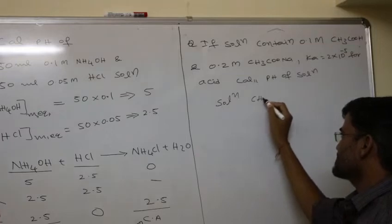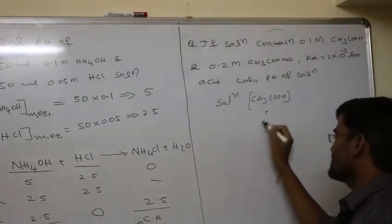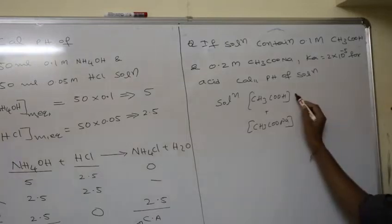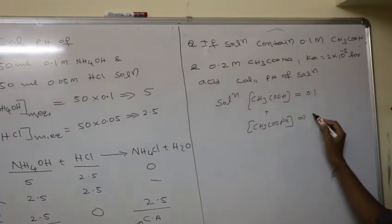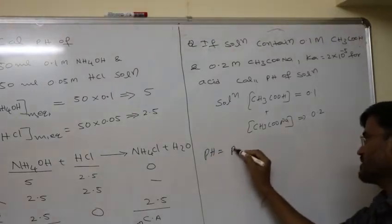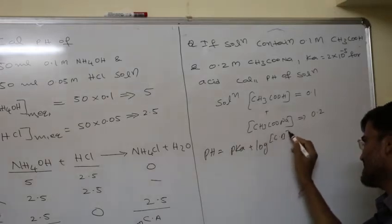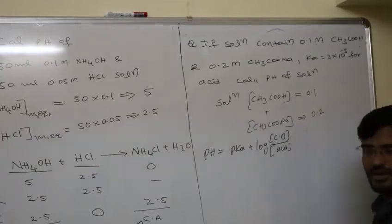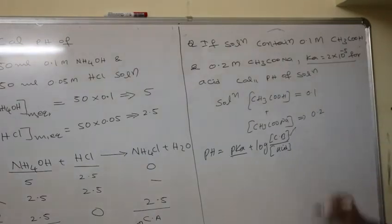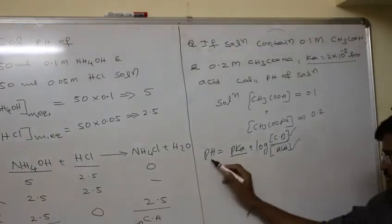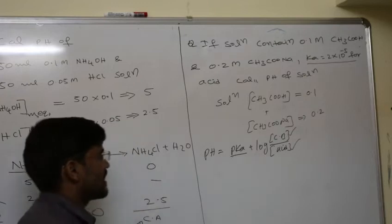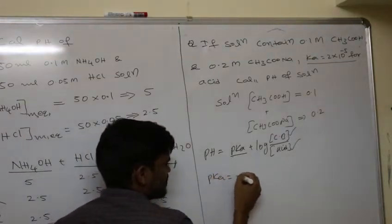We have weak acid present and its conjugated base sodium acetate also present, so this is a buffer solution. Concentration of acid = 0.1, concentration of conjugated base = 0.2. The formula for acidic buffer is pH = pKa + log(conjugated base / acid). The question gives Ka instead of pKa, so we calculate pKa = −log(Ka) = −log(2 × 10⁻⁵). This equals −log 2 + 5 = 5 − 0.3010 = 4.699, approximately 4.64.